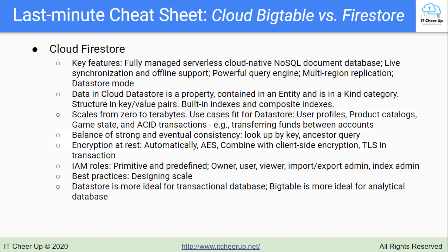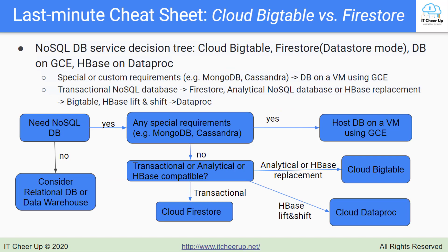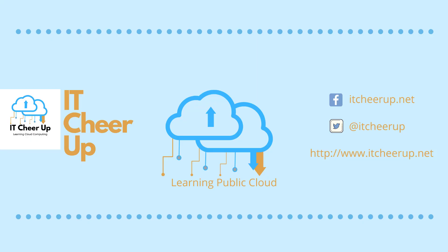As a conclusion, Cloud Datastore is best for semi-structured transactional data, while Bigtable is best for analytical data with heavy read and write events. We finished the last-minute cheat sheets of Cloud Bigtable and Cloud Firestore for fully managed NoSQL database services in Google Cloud. In the next video, I will go through the NoSQL database service decision tree and how to use the cheat sheets to answer NoSQL database questions from the PDE sample questions.